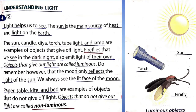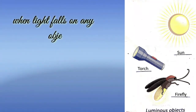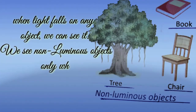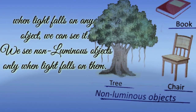Paper, table, kite and bed are examples of objects that do not give out light. Objects that do not give out light are called non-luminous objects. Jo aise object jo hume prakas nahi dete hain, unko hum non-luminous object bolte hain. When light falls on any object, we can see it. We see non-luminous objects only when light falls on them — tab hi hum unko dekh paayenge.